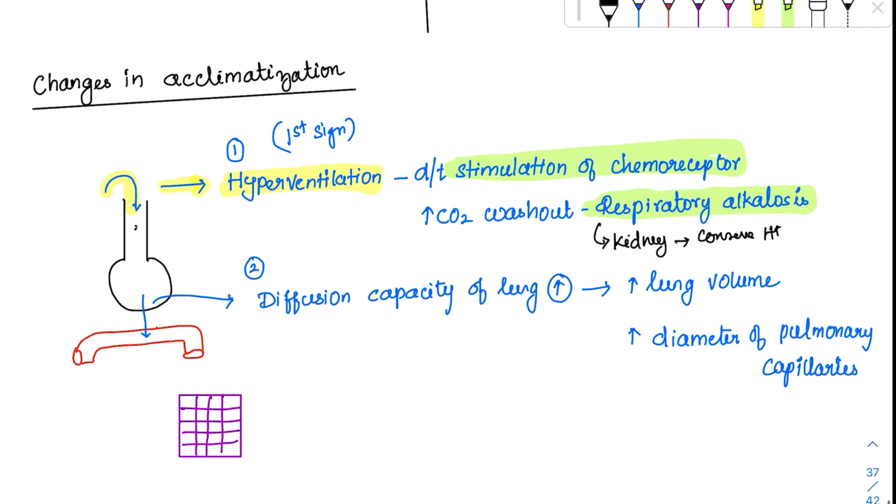Second, at the diffusion point in the alveoli which diffuse oxygen to blood, the diffusion capacity of the lung itself increases, both by increasing lung volume and increasing the diameter of pulmonary capillaries. This helps increase diffusion capacity.